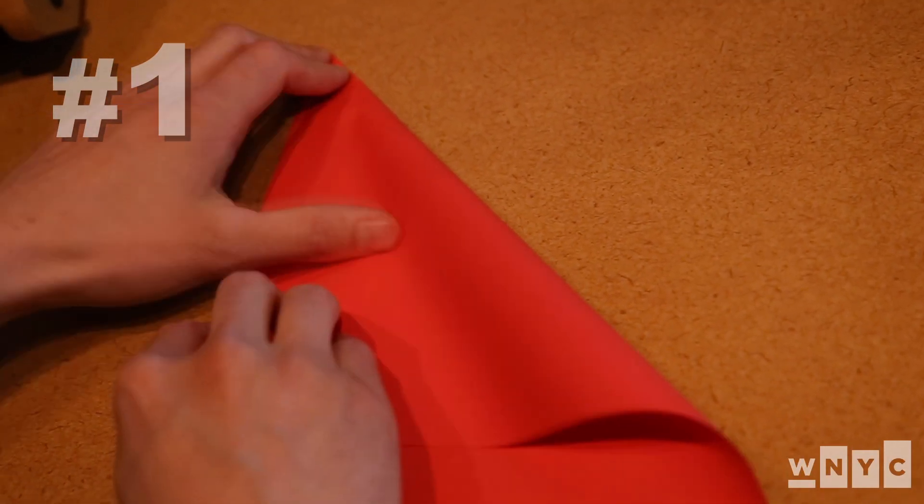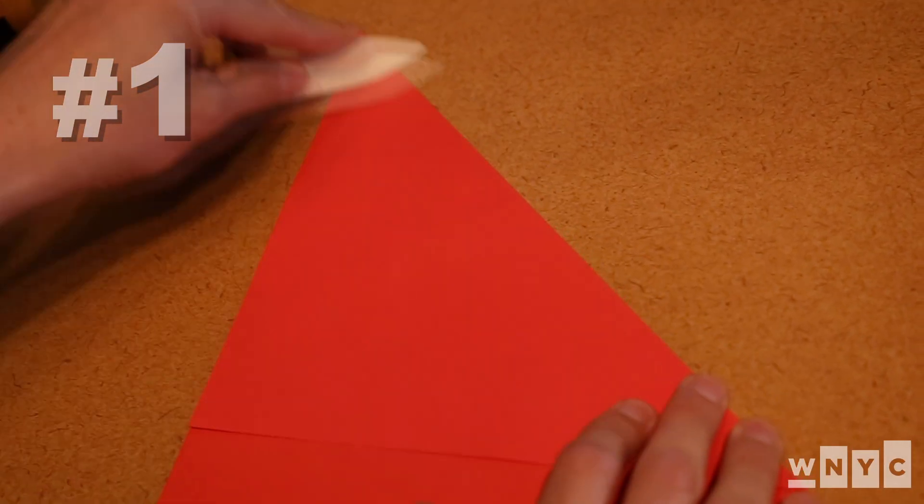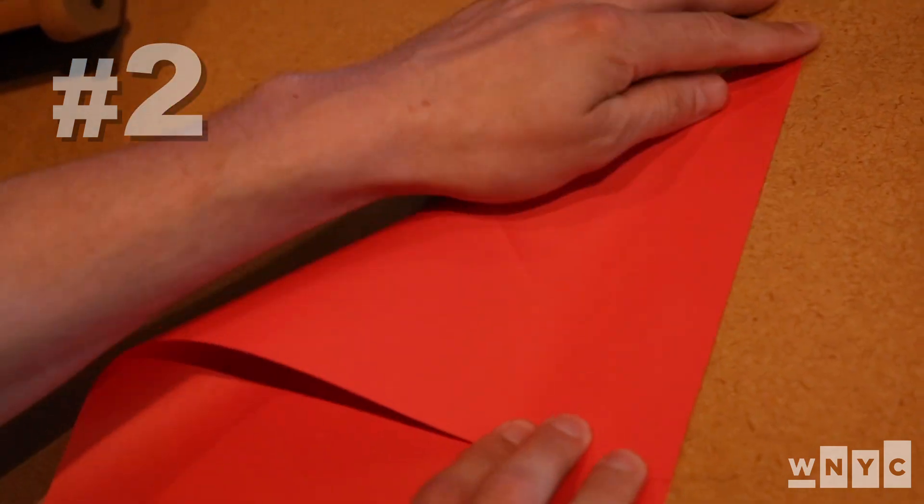Take the upper right hand corner of the paper and draw it down at a 45 degree angle, open it back up, and now make the opposite fold.